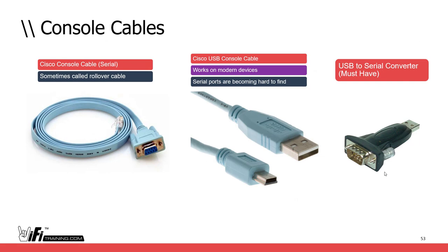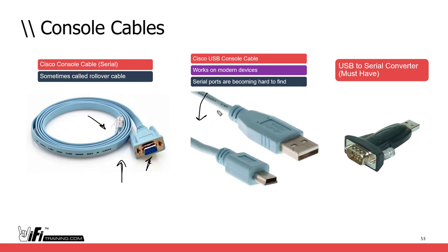Now let's talk about console cables. Back in '96 or '97, I got my first serial console cable - my first Cisco router cable. These have been around forever and come with every Cisco switch and every Cisco router. It's blue in color, one end has a serial port and the other has a standard RJ45 that goes into the serial port on the device to manage it. Newer devices also have a Bluetooth option, and Cisco sells new Bluetooth console cables.